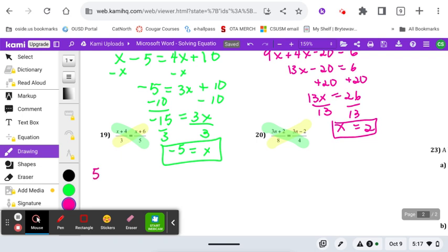We would go like the green one first. 5 times the numerator x plus 4 is equal to 3 times x plus 6. So you're doing the first diagonal, you multiply it equal to the second diagonal.